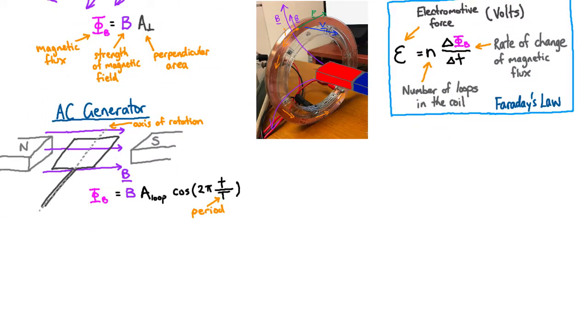If we look at the flux as a function of time, we start at time equals zero. Cosine of zero is one. And so we start at the maximum of the magnetic field times the total area of the loop. And then cosine just goes like this.